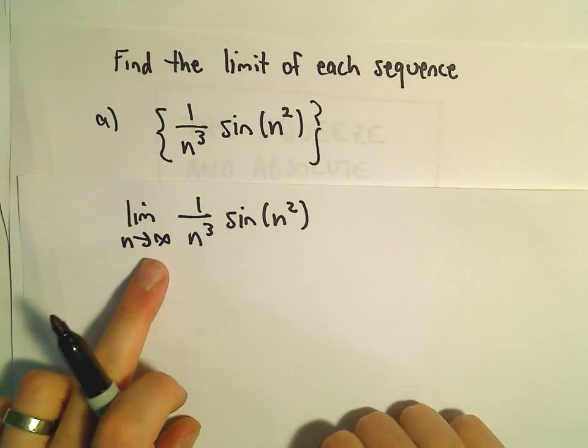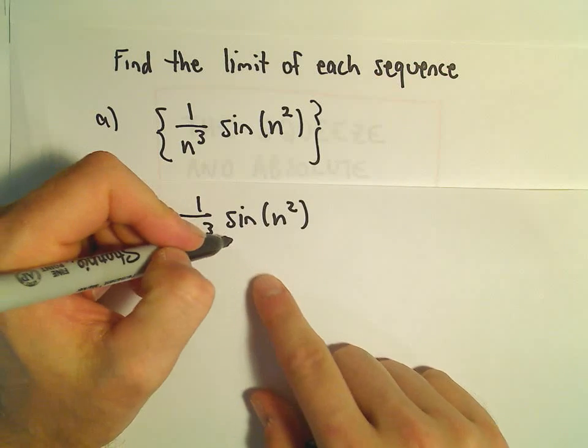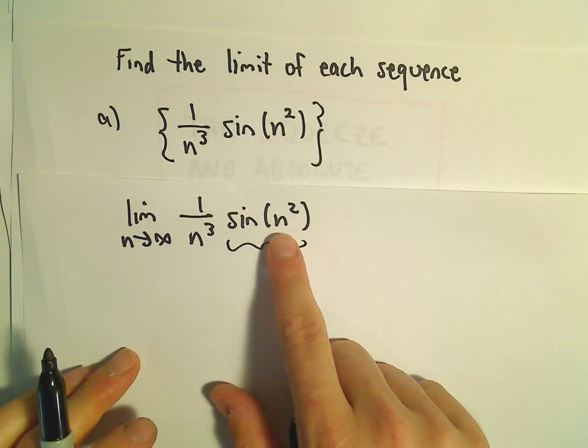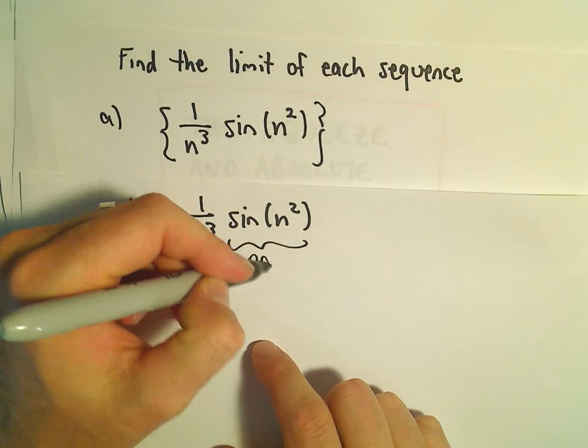The problem is though, as n goes to infinity, n squared goes to infinity, but as the inside of sine gets bigger and bigger, sine of that, that limit simply does not exist.